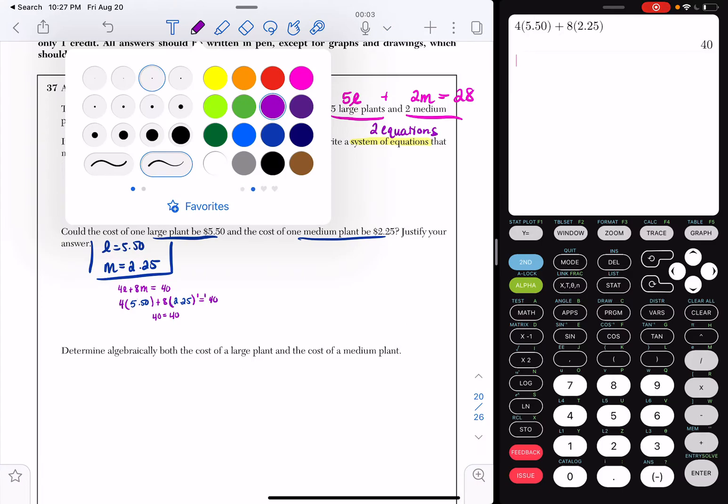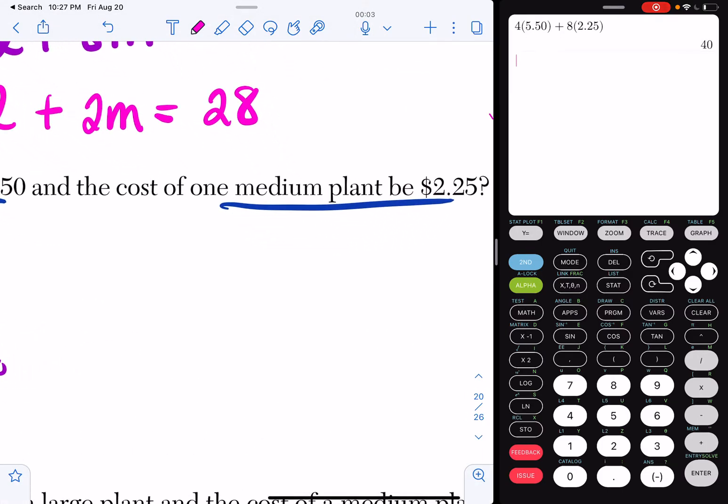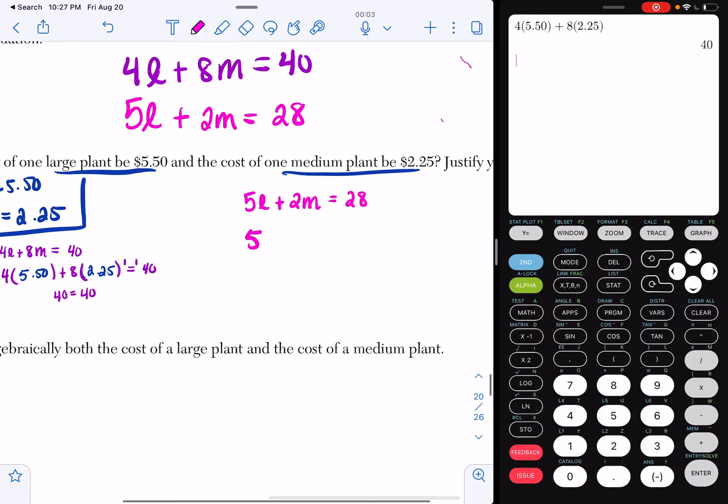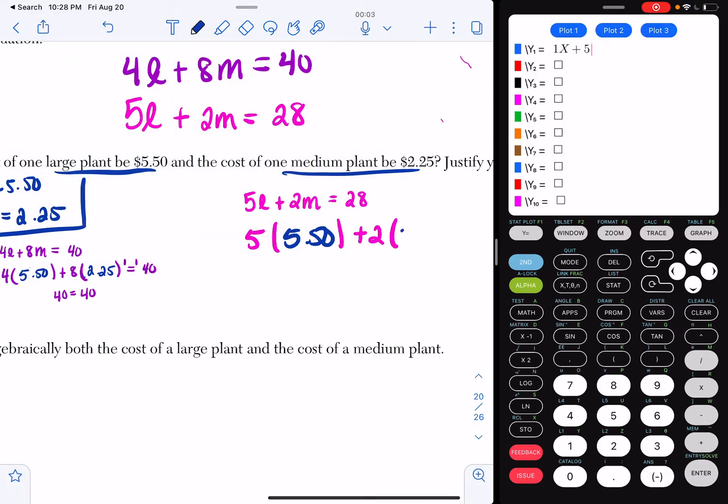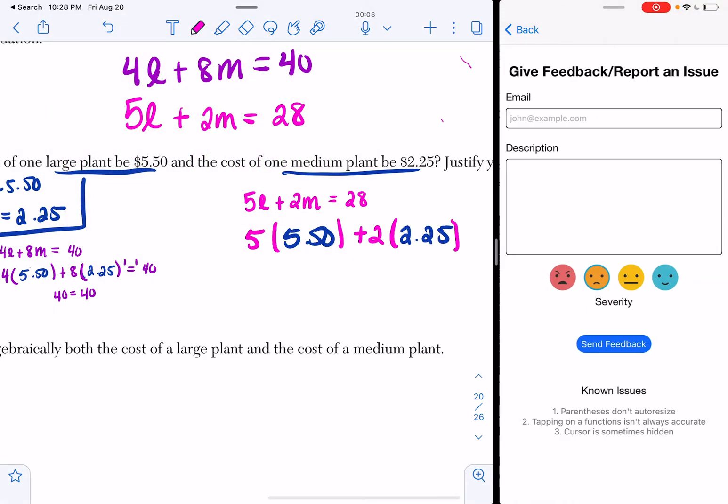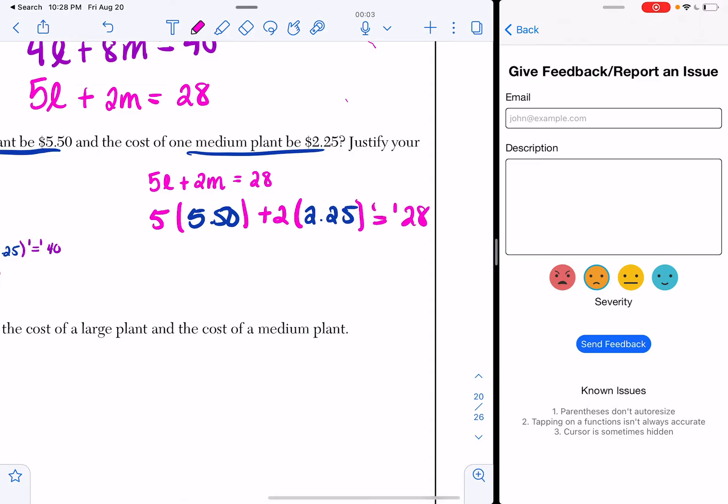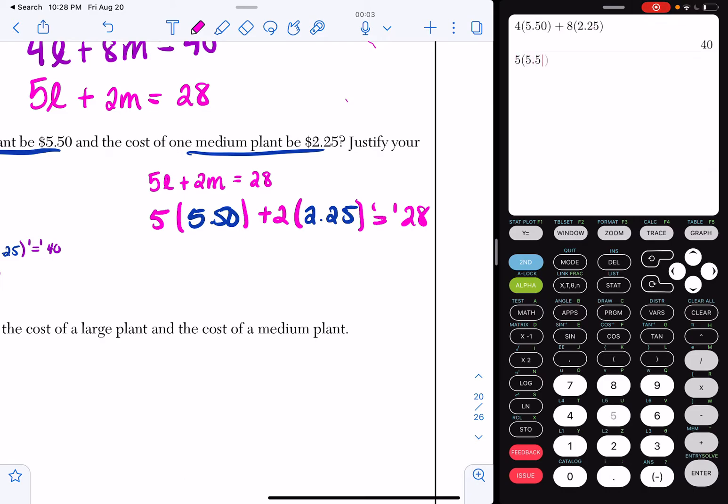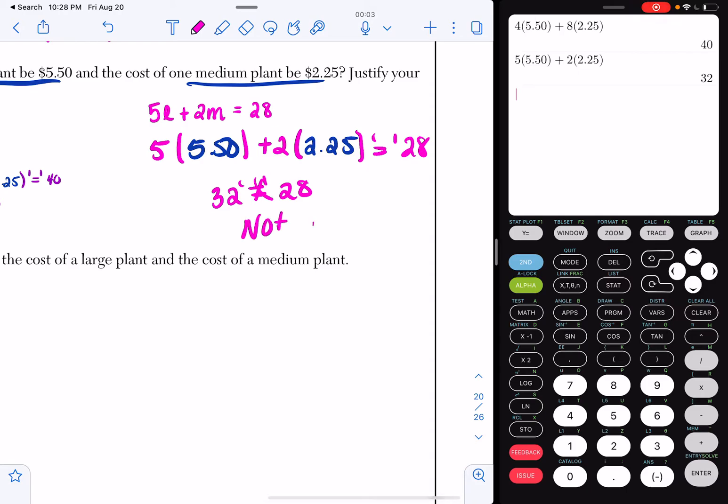But now we have to check it for our pink equation. So in our pink equation, we know 5L plus 2M is equal to 28. And we're saying that L is 5.50 again. Plus 2. And we said M was 2.25. And we're saying that that is equal to 28. So let's see what happens. I'm going to do 5 times 5.50. Add 2 times 2.25. And I get 32. 32 is not equal to 28. So this is not possible. So we're just going to write not possible. And that's all you would have to write.